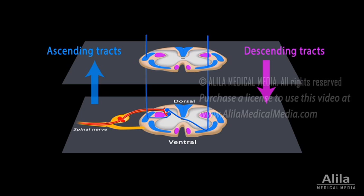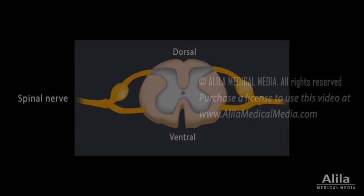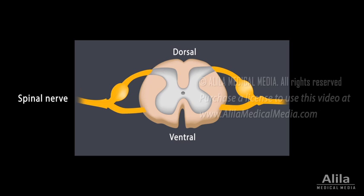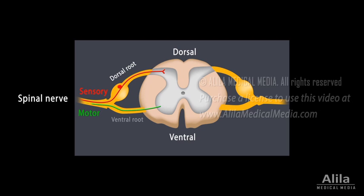When this happens, the information is said to be transmitted contralaterally. Tracts that stay on the same side all the way are said to conduct information ipsilaterally. Spinal nerves are mixed nerves — they contain both sensory and motor fibers. These fibers are separated shortly before they reach the spinal cord. Sensory fibers enter the cord via the dorsal root, while motor fibers exit via the ventral root.